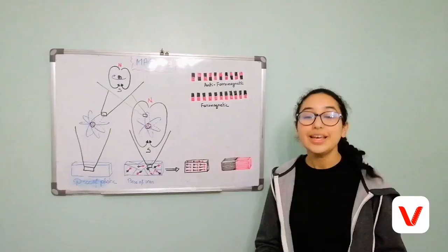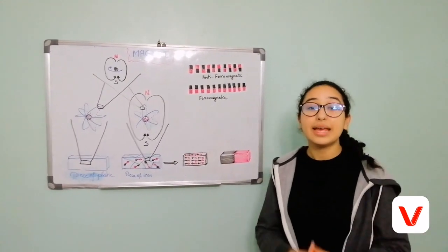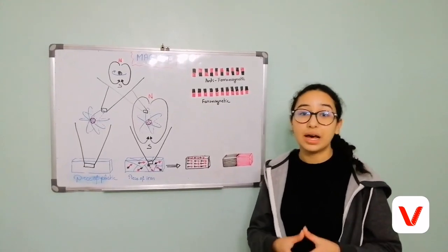But why don't these lines influence other objects like plastic and wood? To understand this, we have to get down to the atomic level and examine the magnetic nature of an atom's electrons.